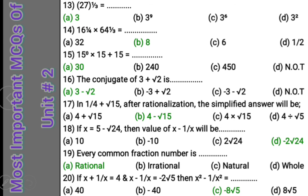Question 20 (the last MCQ): If x plus 1 upon x equals 4 and x minus 1 upon x equals minus 2 square root 5, find x squared minus 1 upon x squared. Multiply (x plus 1 upon x) by (x minus 1 upon x) — the left side gives x squared minus 1 upon x squared. So multiply the right sides: 4 into minus 2 square root 5 equals minus 8 square root 5. The correct answer is minus 8 square root 5.